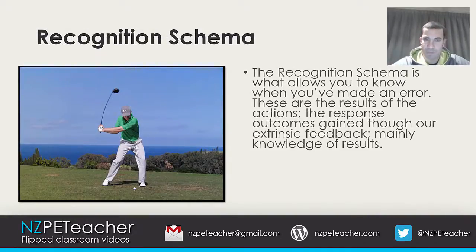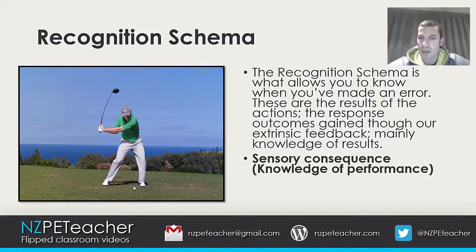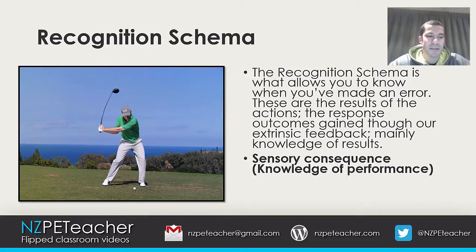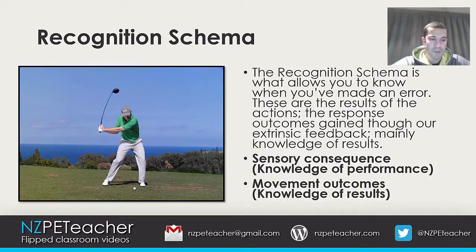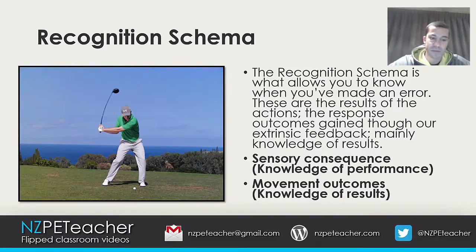The recognition schema is what allows you to know when you've made an error. These are the results of the actions — the response outcomes gained through our extrinsic feedback, mainly knowledge of results. Sensory consequences are all about how the skill should feel. Jordan Spieth wants to drive the ball as long as possible while keeping it in the fairway. He's driven the ball so many times that he'll immediately use his kinesthetic awareness for feedback during a skill — he'll feel how fast the club is moving, whether the club feels like it's on the right swing plane, and how clean the impact with the ball was. This occurs throughout the entire movement, and the feeling is used in conjunction with the movement outcome — simply success or failure — to determine future actions in a similar situation. If Spieth's ball went into the water, he would identify small sensory consequences that led to a failed outcome.